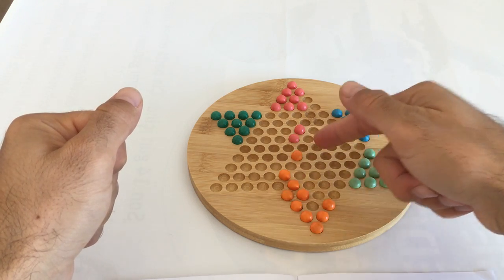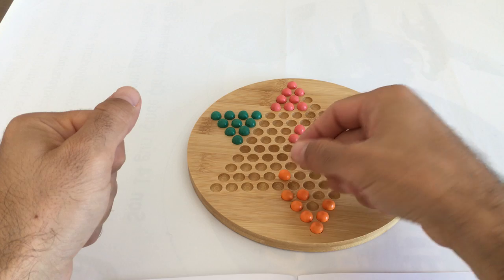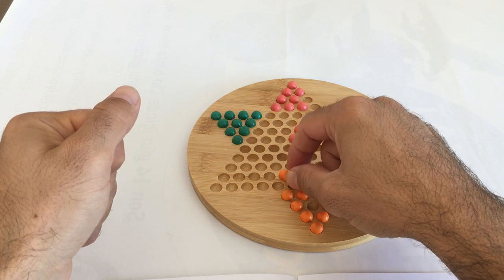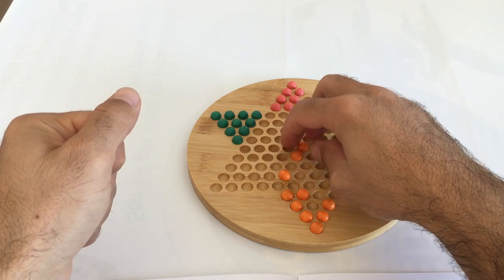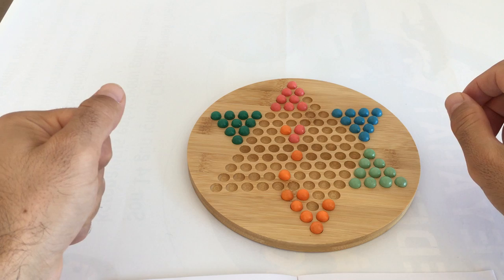For example, there is a position like that. This ball can jump here and then here and then here at once.